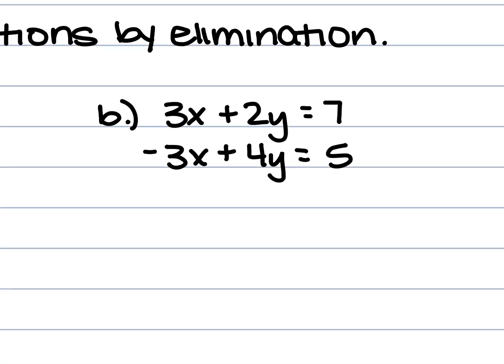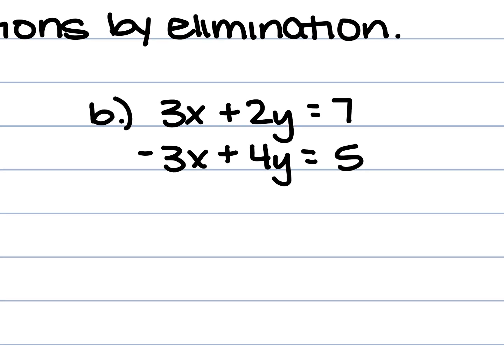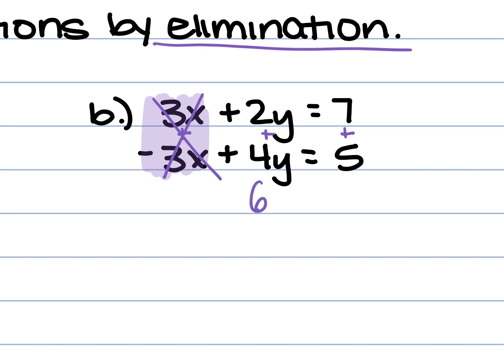Let's look at b. Do we have the same coefficient but opposites? The x's — they are the same but opposites, so we don't have to do anything. We can just go ahead and combine our equations. What's 3x minus 3x? 0 — they cancel out, they're eliminated. What's 2y plus 4y? 6y. And 7 plus 5? 12.